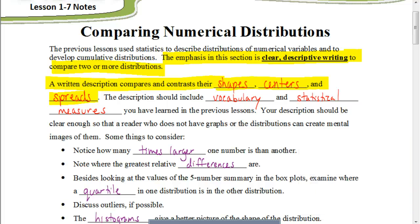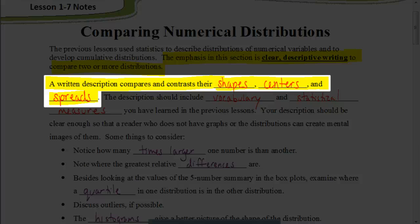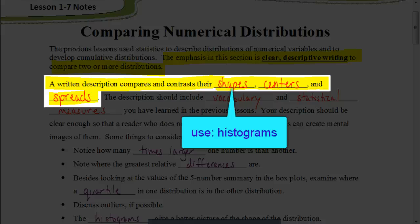One of the first things to recognize is that any time you write your written descriptions, you should compare three things. You should compare the shapes of the data, the centers, and the spread of the data. The shapes, we would get that from the histograms. That's going to give us the best idea to describe the distribution of the data dealing with their shape.